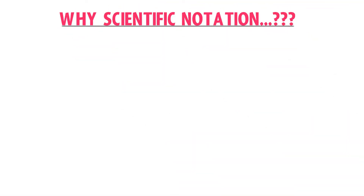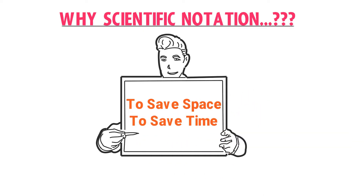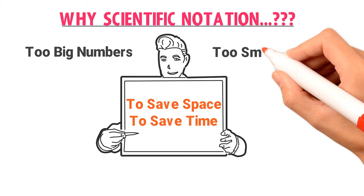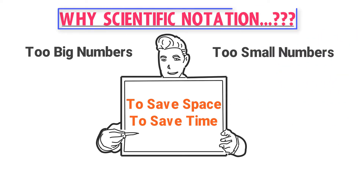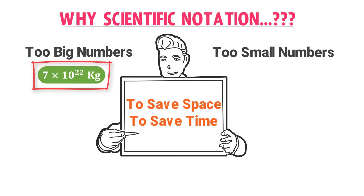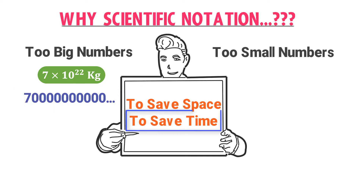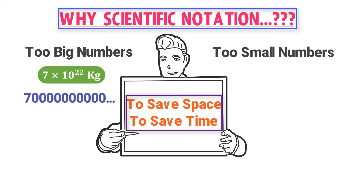First, you should learn why we need scientific notation in physics or mathematics. The answer is to save space and time while writing very big or very small numbers. For example, the mass of the moon is 7 × 10²² kg. If written in ordinary form, it would be 7 followed by many zeros — a lot of space and very time-consuming.